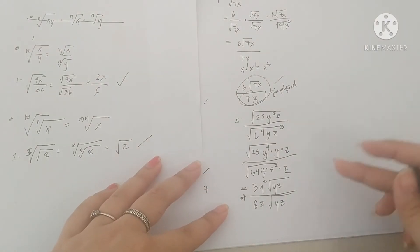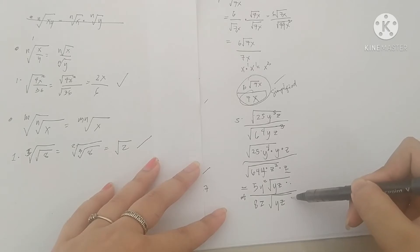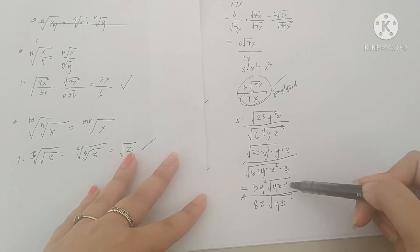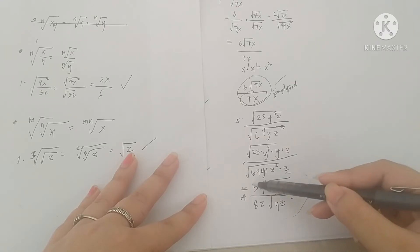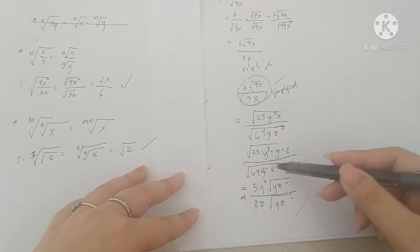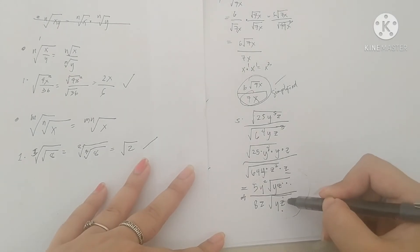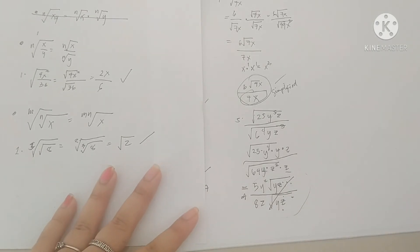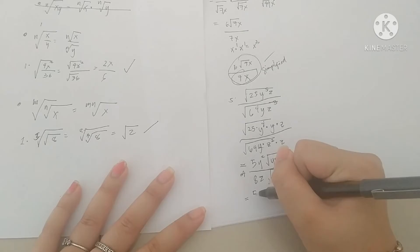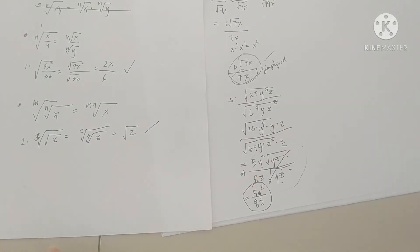This is not the final answer yet. We have square root of yz in the numerator and square root of yz in the denominator. By the law of exponents, these cancel out, leaving us with 5y² over 8z as our final answer.